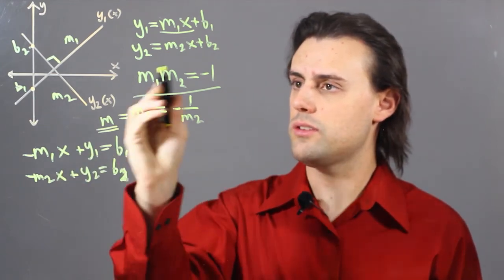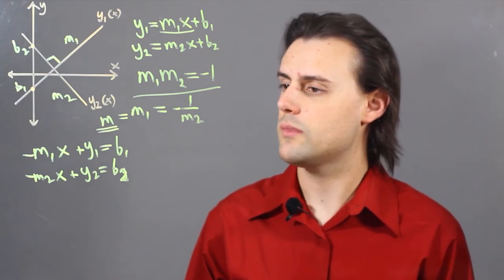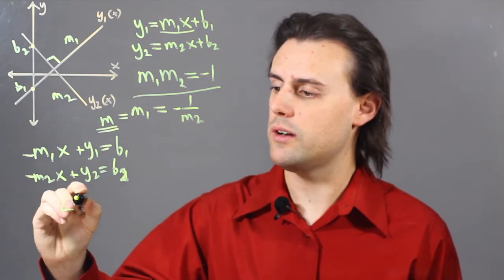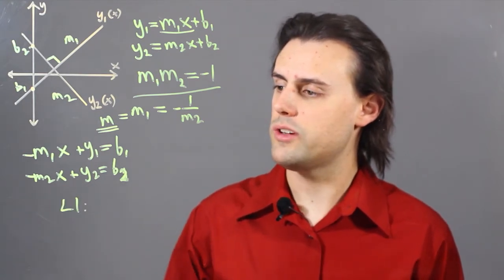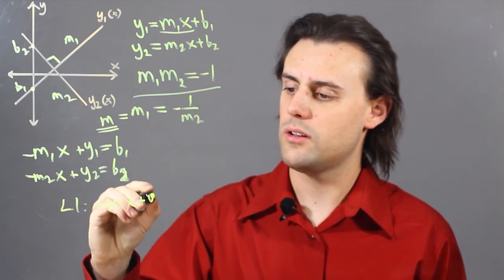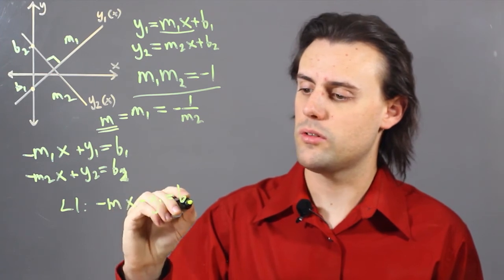So now, using this relationship, I can rewrite m1 and m2. So for line 1, I'm going to have negative m2x plus y1 is equal to b1.